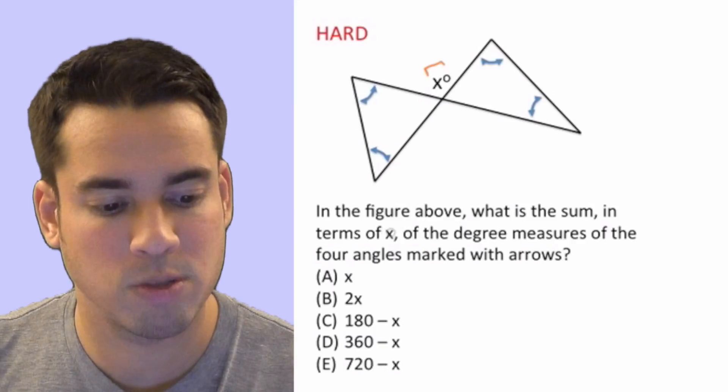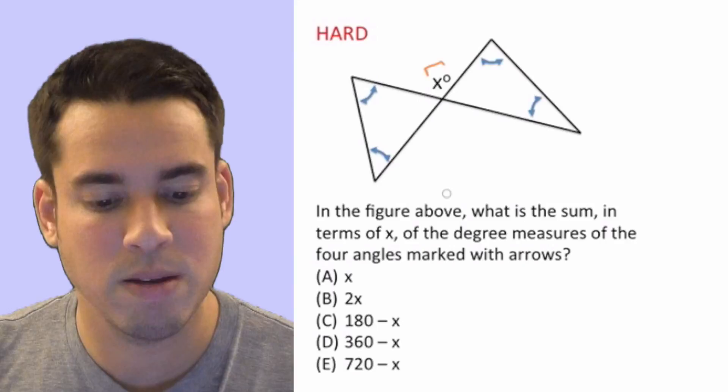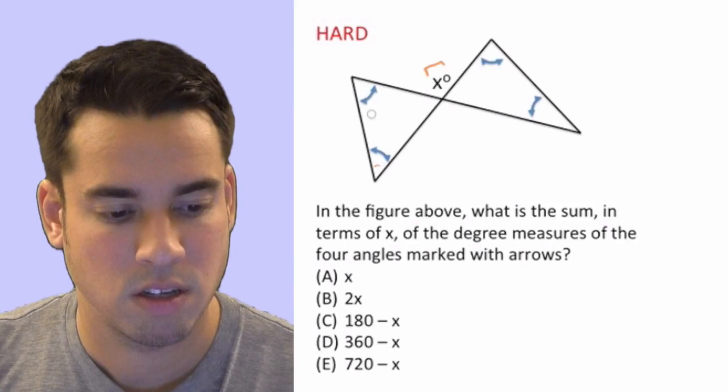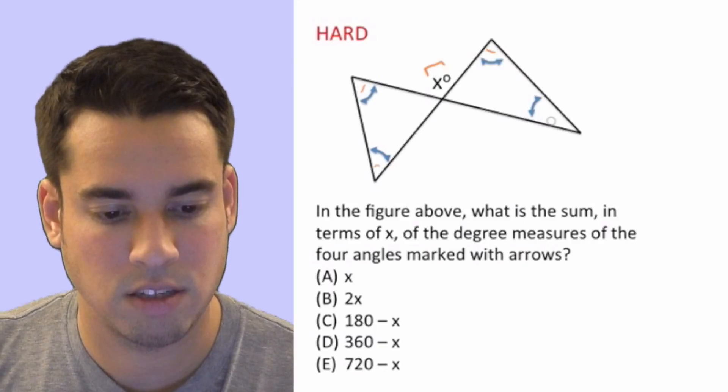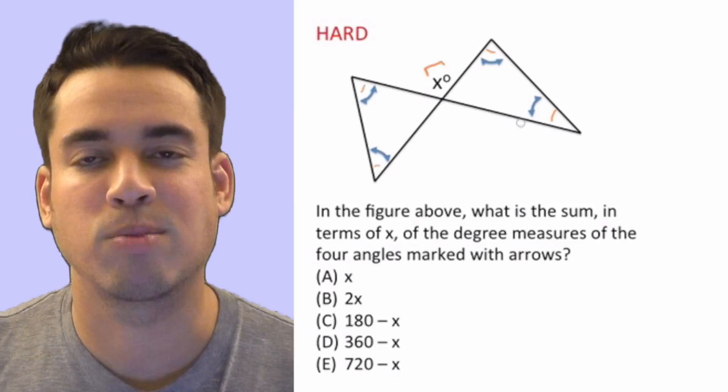Let's read the question. In the figure above, what is the sum in terms of x of the degree measures of the four angles marked with arrows? So that's here, here, here, and here. We want to know what all these angles add up to in terms of x.